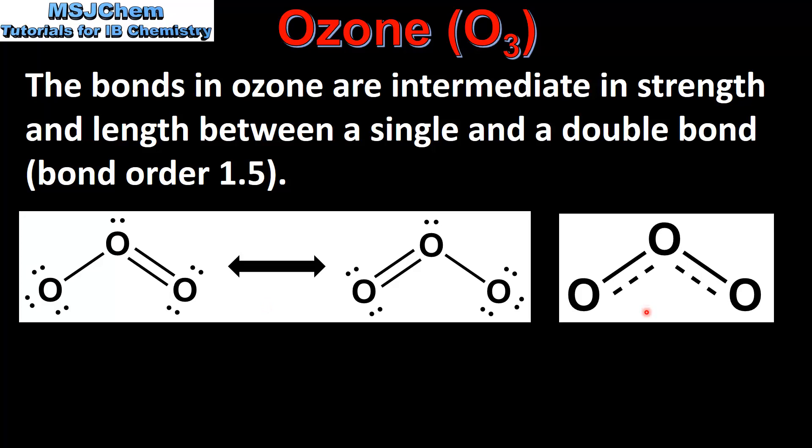On the right we have the resonance hybrid structure of ozone. In the resonance hybrid structure the bonds between the oxygen atoms are intermediate in length and strength between a single and a double bond.